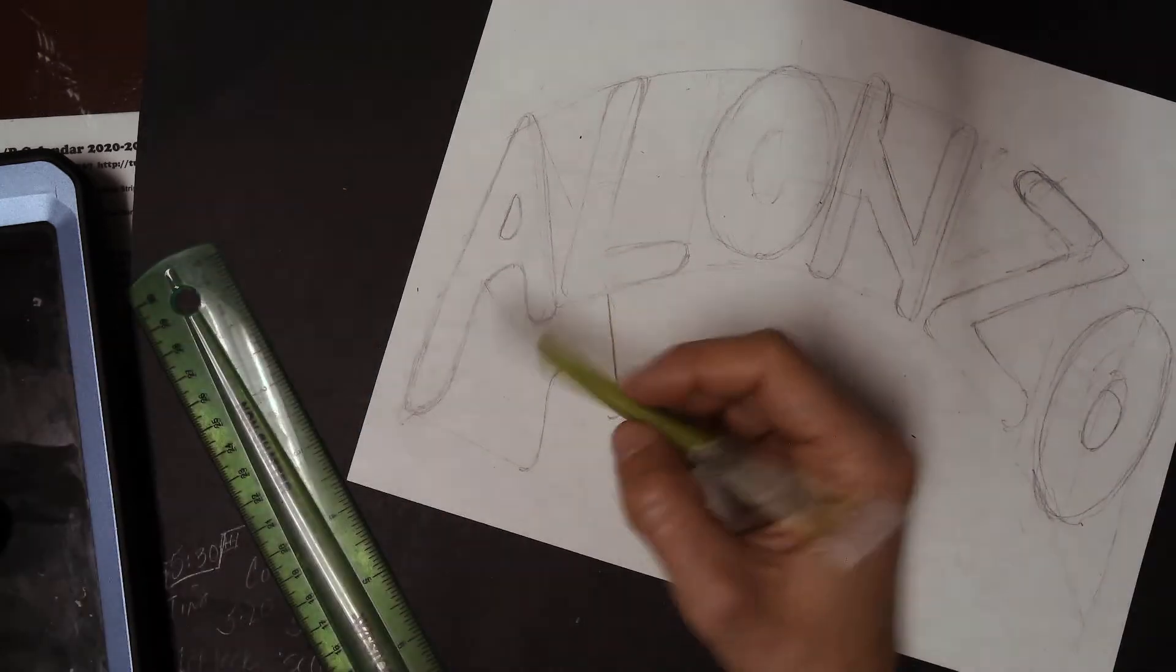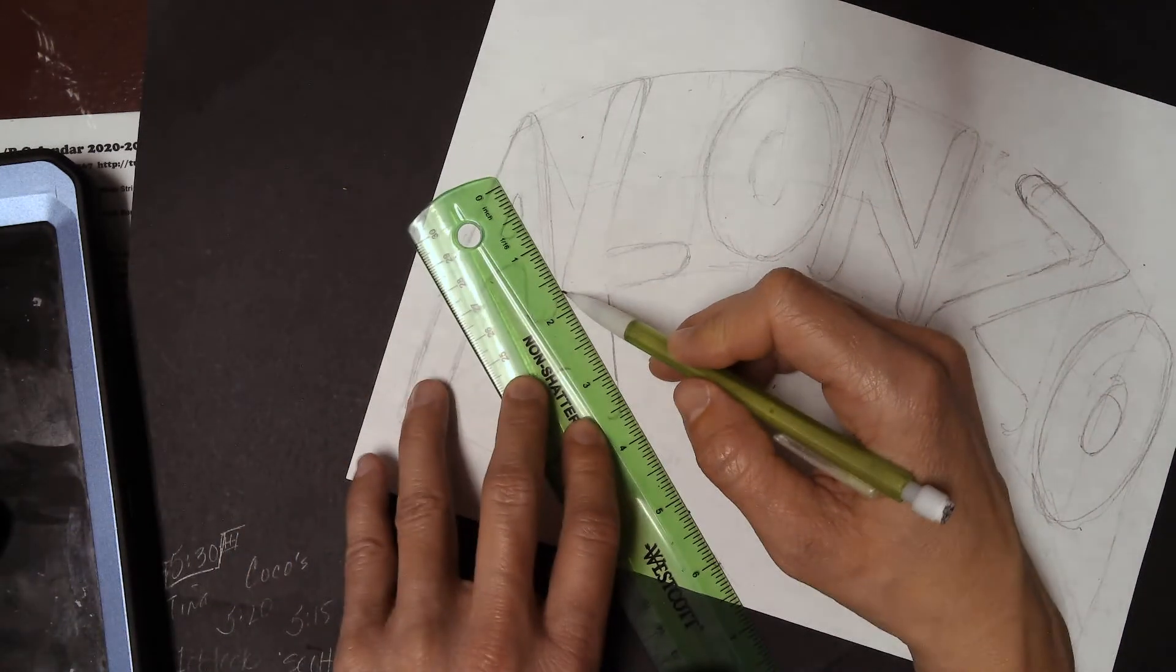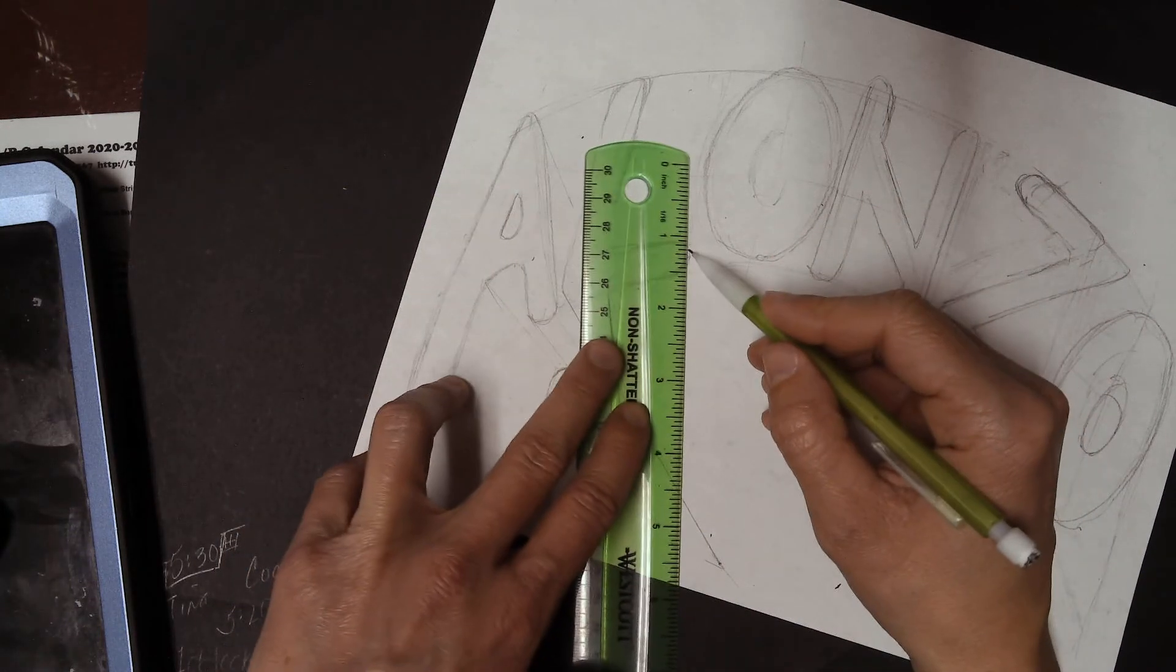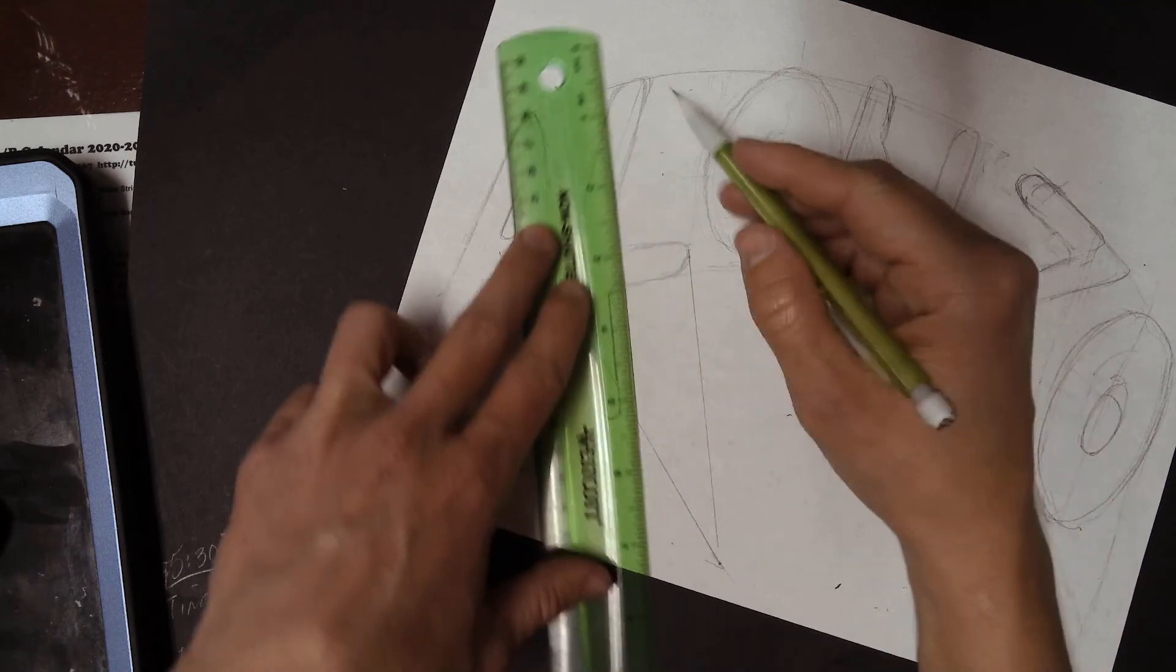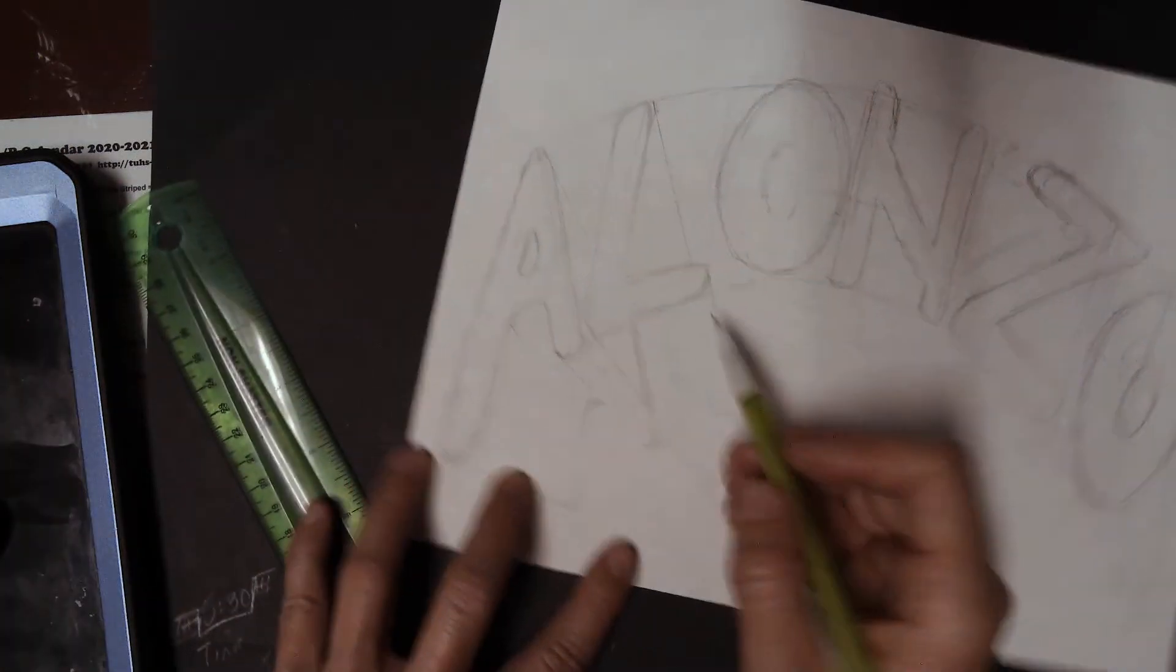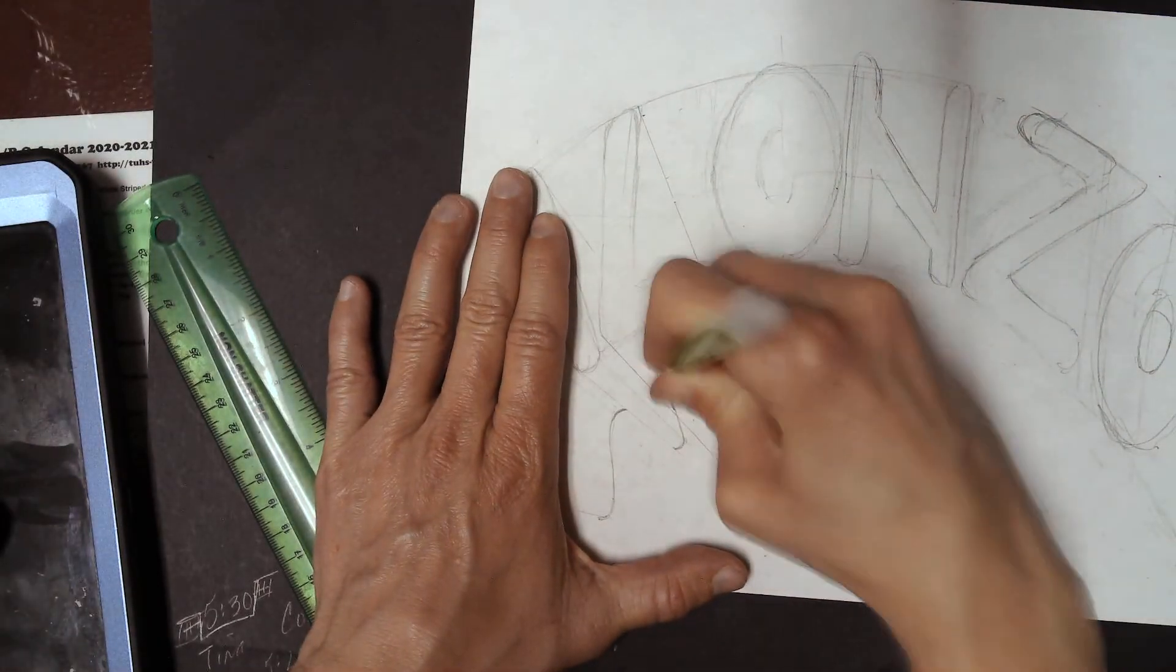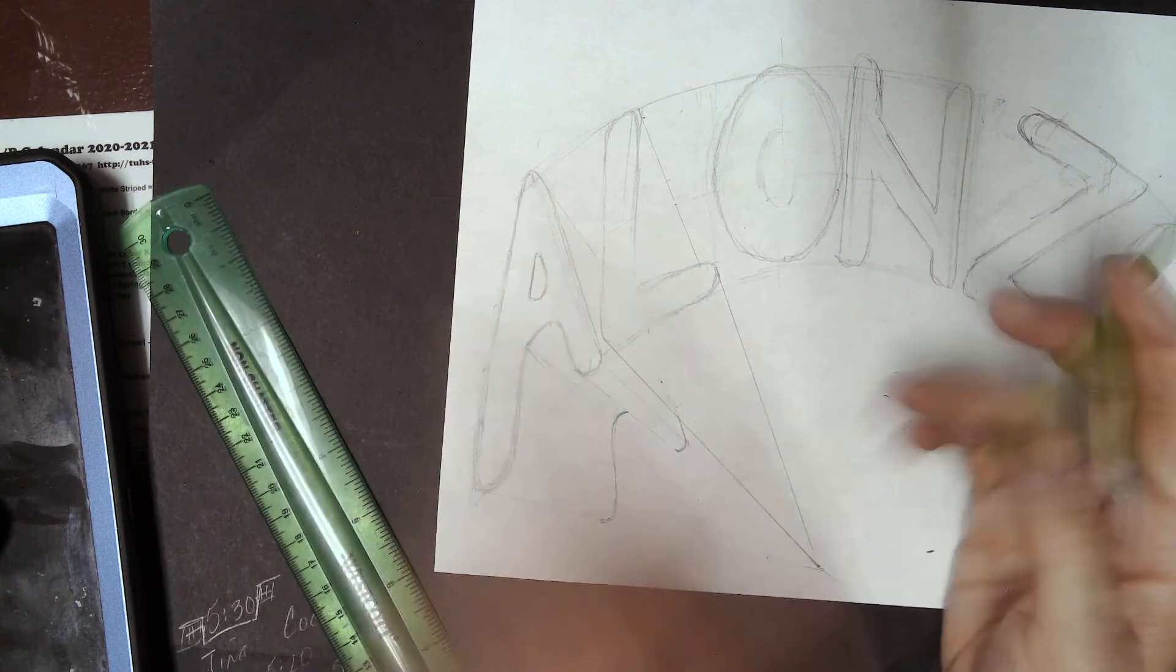All right. So, that is a three-dimensional bubble letter A. We'll move on to the L. We have a part of the A inside the L. Never fear. We have a white eraser to get rid of it. Okay.